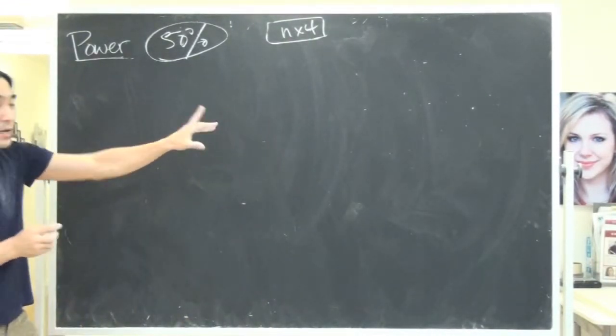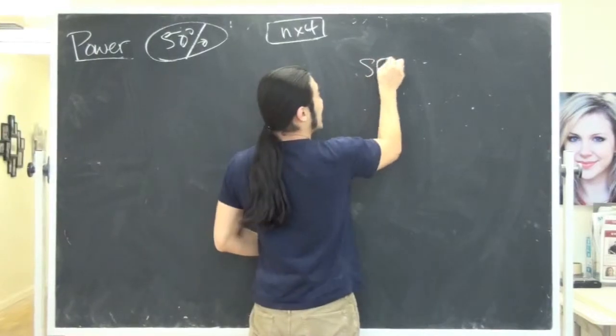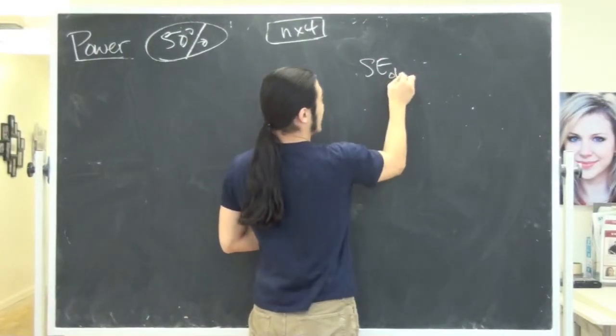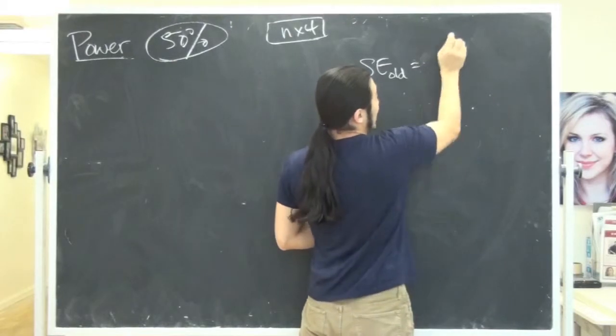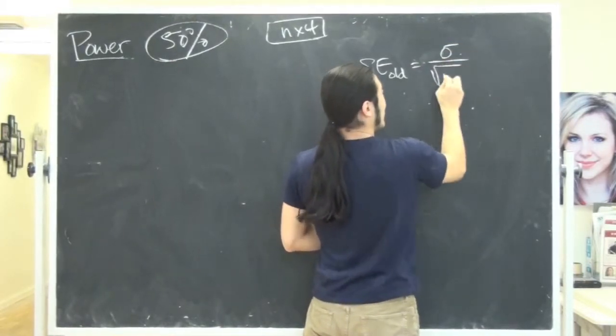Can't use that nice trick we did before because if you're examining the standard error, in fact this is a good point to make. Let's look at the old standard error which would have been what? It would have been sigma over the square root of n, right?